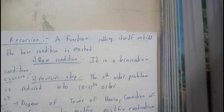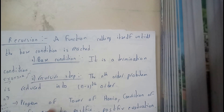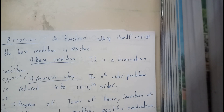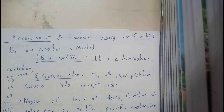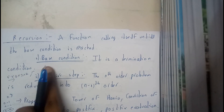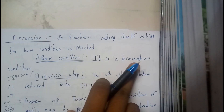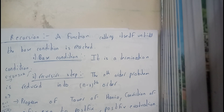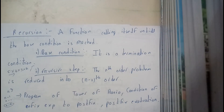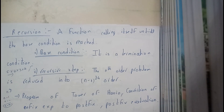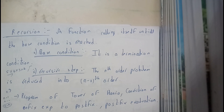We'll also cover recursion, which is one of the smallest topics. Recursion is defined as a function calling itself. It will call itself continuously, and it stops when it reaches the base condition. The base condition is a termination condition — at that position the program stops and continues the rest. The recursive step reduces the problem from n steps to n minus 1, and at the end it reaches n minus n and the program terminates.